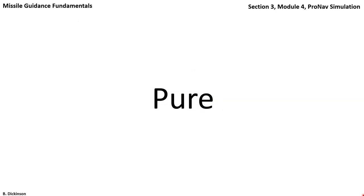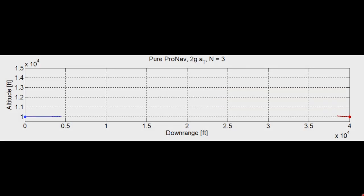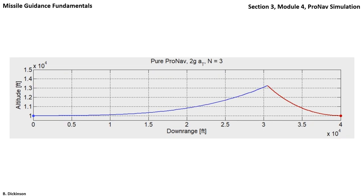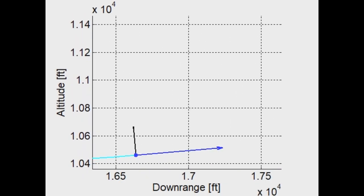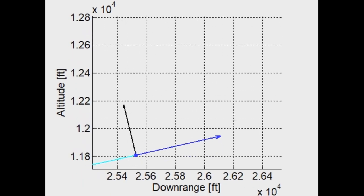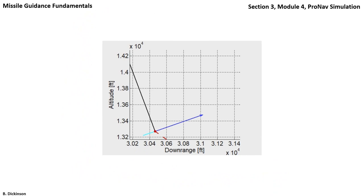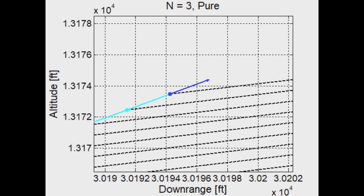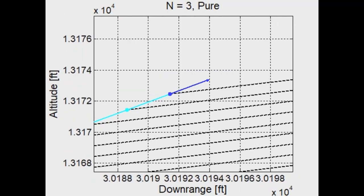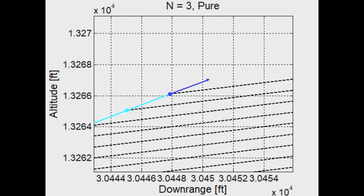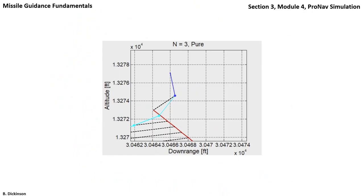Now pure proportional navigation. The trajectories look similar. Following the pursuer along its trajectory, we see the distinguishing factor of pure pronav, where the acceleration in black is perpendicular to the blue velocity vector. And then just moments before collision, the spacing between the range vectors is constant and the lead angle of the pursuer is not changing, indicating a collision triangle.